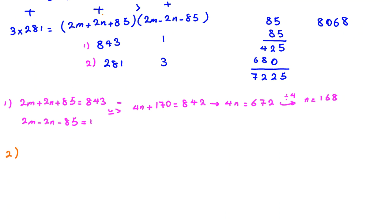Similarly, if you do the same thing, for second case it's 4n plus 170 again. In this case, 281 minus 3 will be 278. Now if you subtract 170 from both sides, it will be 108. And if you divide both sides by 4, then n will be 27.